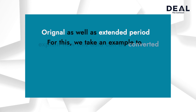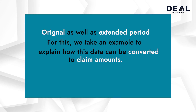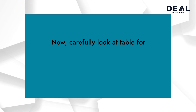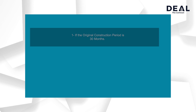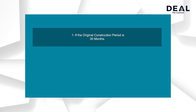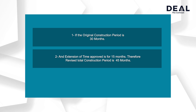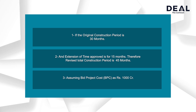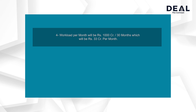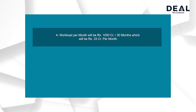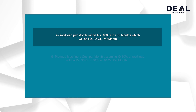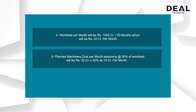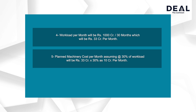For this, we take an example to explain how these data can be converted into claim amounts. Carefully look at the table for claims quantification. 1. If the original contract period is 30 months. 2. And the extension of time approved is for 15 months. 3. Assuming bid project cost BPC as Rs. 1000 crore. 4. Workload per month will be Rs. 1000 crore divided by 30 months, which will be Rs. 33 crore per month. 5. Planned machinery cost per month, assuming 30% of workload, will be Rs. 33 crore into 30%, i.e. Rs. 10 crore per month.